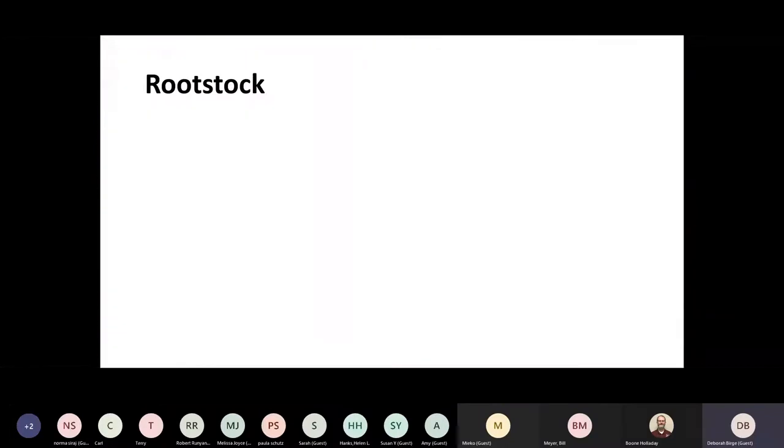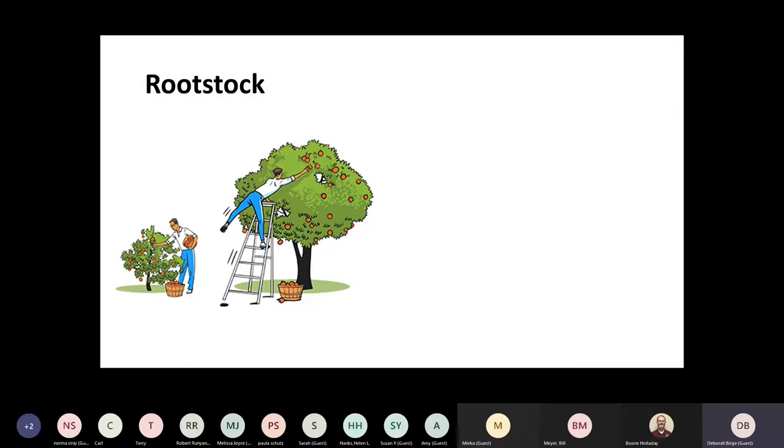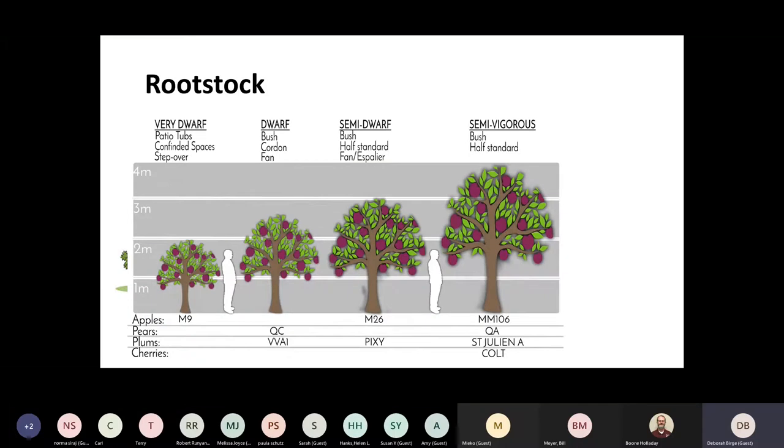To review on the rootstock, sizing is very important. So you need to consider what you want to do about the size of the tree. And that is directly in relationship to the rootstock. You can see if we look at apples, we have the very dwarf that is usually used for patio or containers, and that comes in at about six feet. Then the dwarf will come in at about eight feet. And then you have the semi-dwarf and the semi-vigorous. It's all the rootstock that you're wanting.